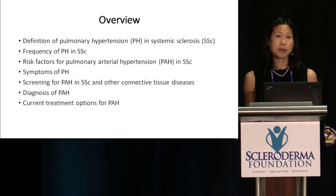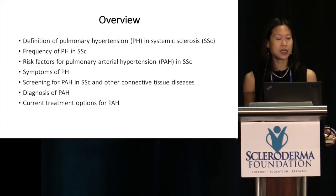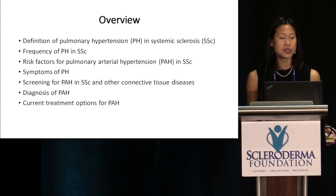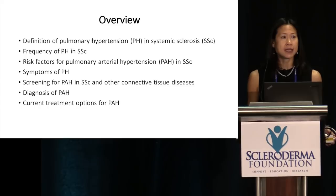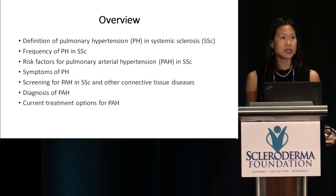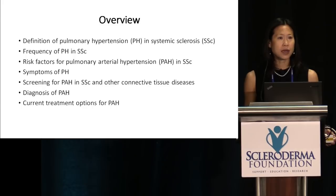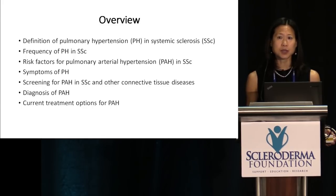Here is an overview of what I'm going to cover today. First, I'm going to review the definition of pulmonary hypertension, the frequency of pulmonary hypertension in systemic sclerosis, the risk factors for pulmonary arterial hypertension, and symptoms of pulmonary hypertension. I will go over the guidelines for screening of PAH in scleroderma and other connective tissue diseases, review diagnostic criteria, and finally end with the current treatment options for PAH.